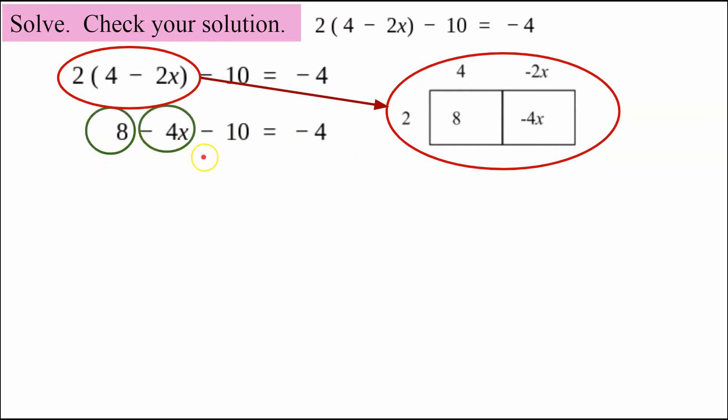We have 8, negative 4x, negative 10, and negative 4. Noticing that we have three terms on the left side of the equation.